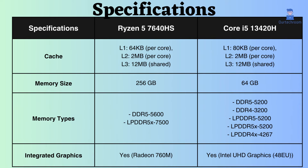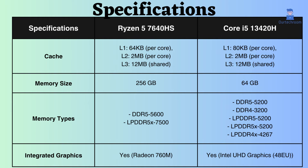The L2 and L3 cache sizes of both processors are identical, but the L1 cache of the Intel processor is 16KB larger than that of Ryzen. Considering this, the Intel processor slightly enhances application responsiveness.